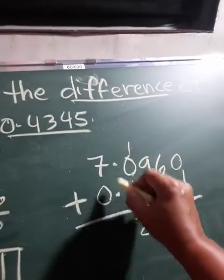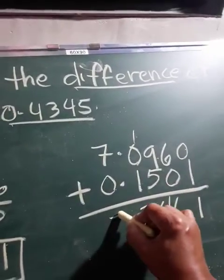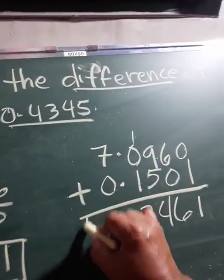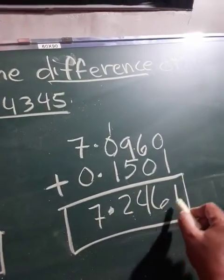Copy the decimal before you forget. 7 plus 0 equals 7. So your final answer is 7.2461.